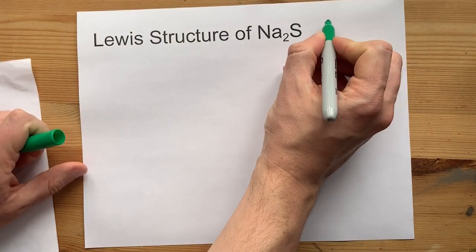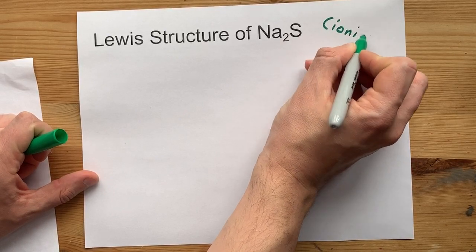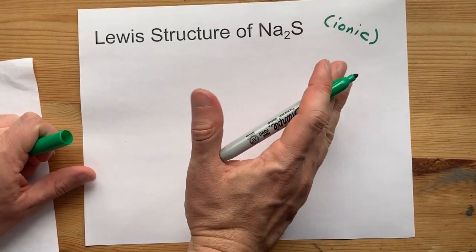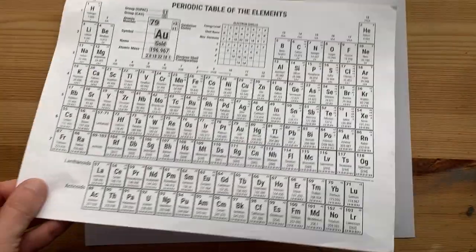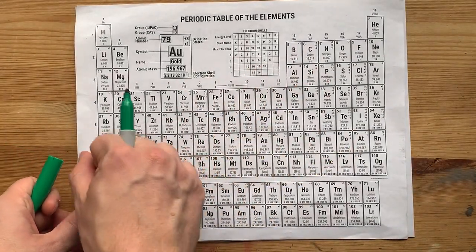When metals and non-metals get together, they form ionic compounds. The metals give away their electrons, and the non-metals take those electrons. Let's see that in detail.